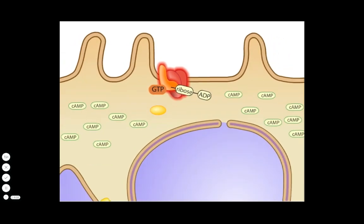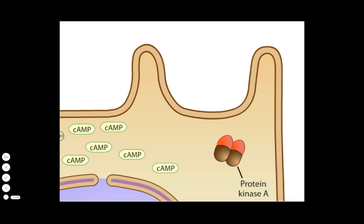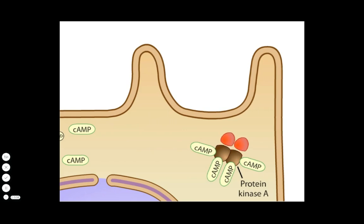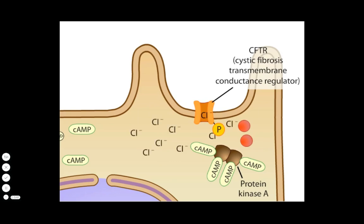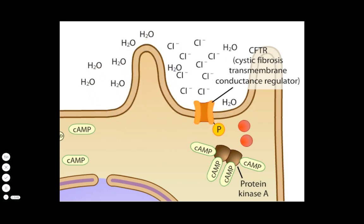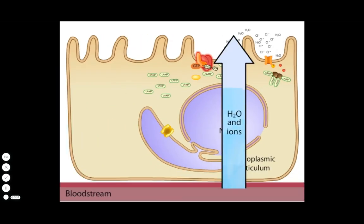Elevated levels of cyclic AMP stimulate a host enzyme called protein kinase A. The catalytic subunits of the enzyme activate various ion transport channels, including one called CFTR, which stands for Cystic Fibrosis Transmembrane Conductance Regulator. CFTR exports chloride ions. As chloride and other ions leave the cell, water leaves as well, in an attempt to equilibrate the osmolarity. Ultimately, the bloodstream provides the water, chloride, and other ions that enter the intestinal lumen. The influx of fluid results in diarrhea.